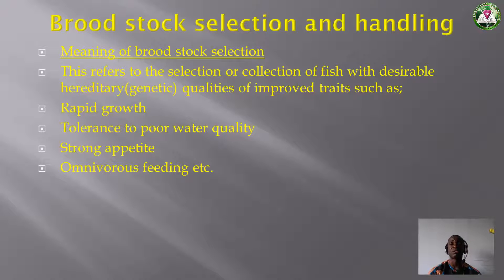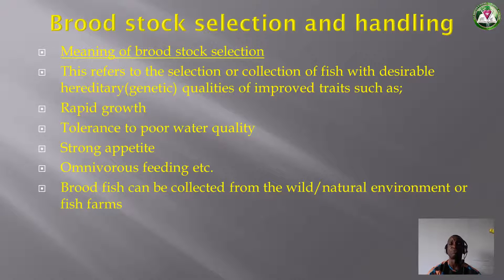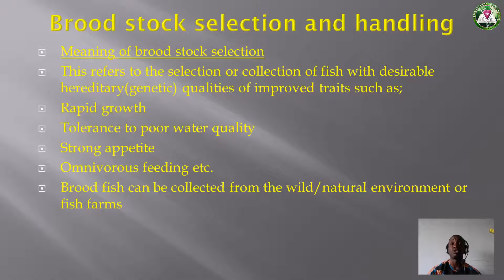Catfish is the prime example — it has rapid growth, tolerance to poor water quality, strong appetite, and omnivorous feeding. Brood fish can be collected from the wild, that is the natural environment such as rivers and streams, or from fish farms nearby.